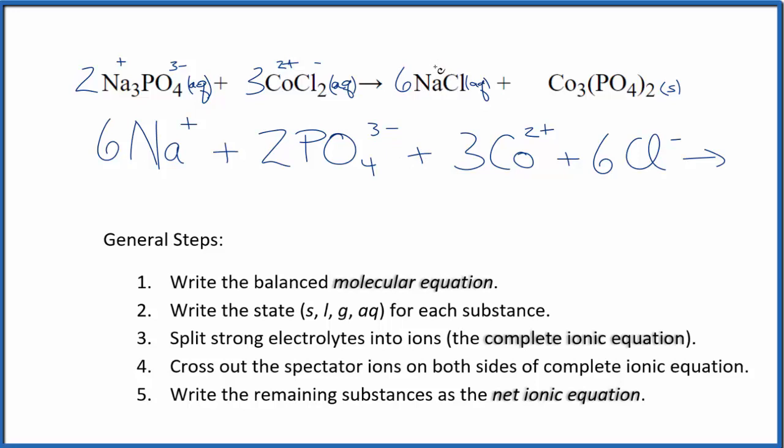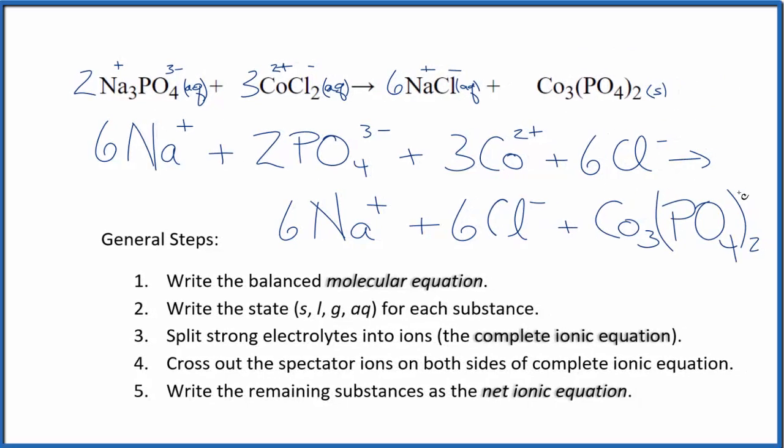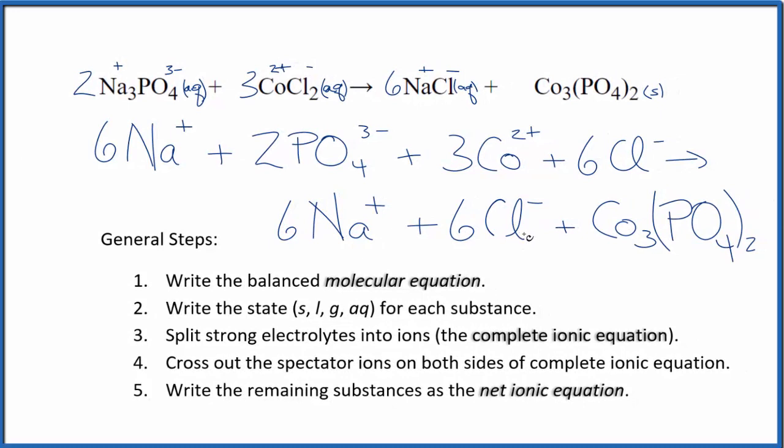In the products, we have positive and negative here. So six sodium ions, just like in the reactants, and then six chloride ions, just like the reactants. And then in net ionic equations, we don't split solids apart. This precipitate here, we're not going to split it apart. So that's just Co3(PO4)2. So this is the complete ionic equation for this sodium phosphate and cobalt two chloride.